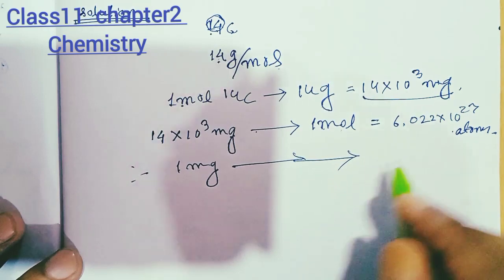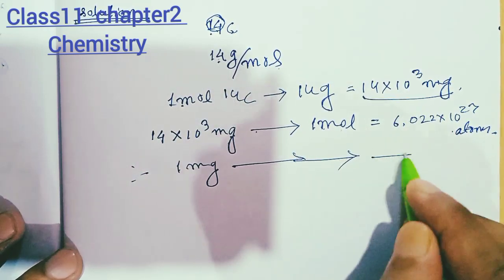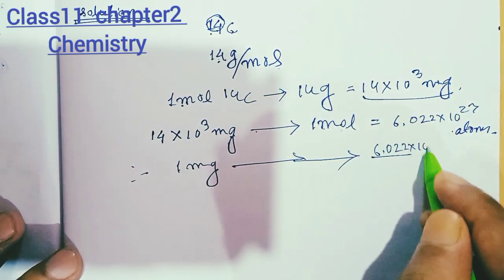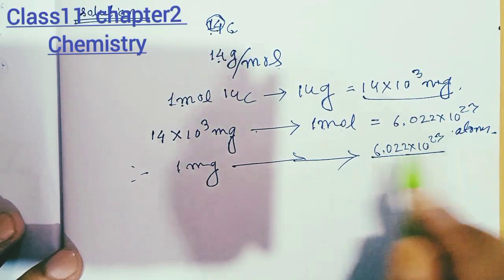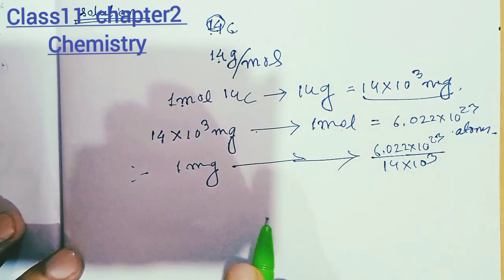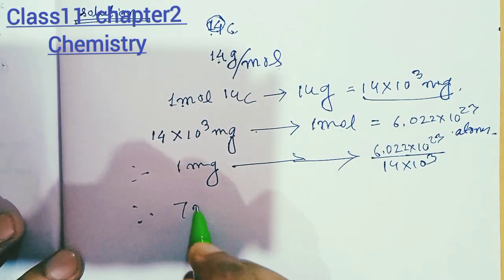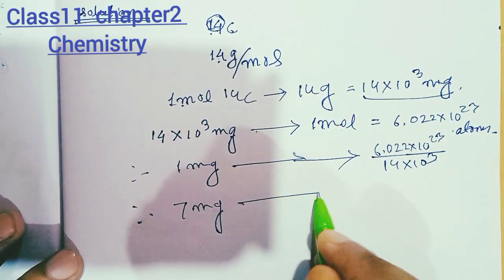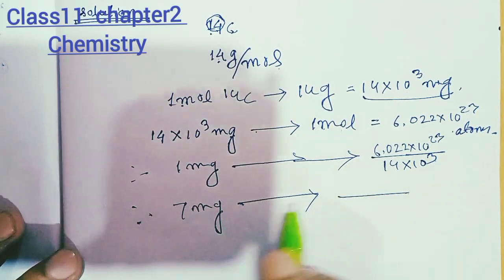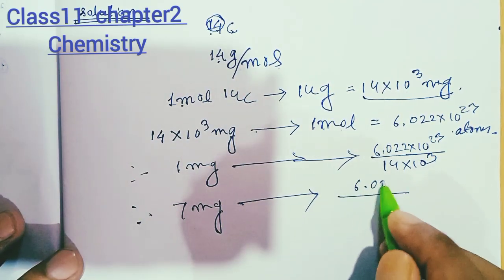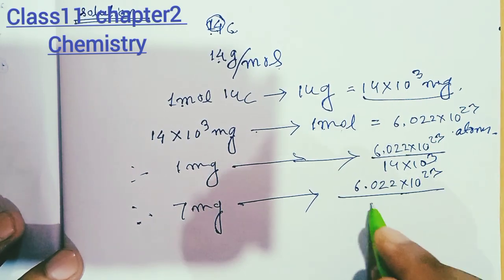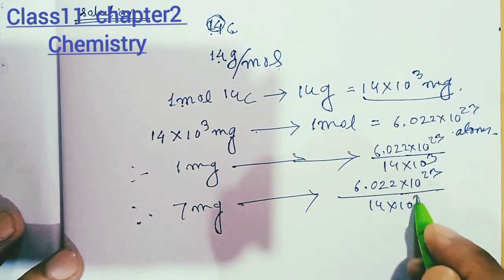For 1 milligram, we use 6.022 × 10²³ divided by 14 × 10³. For 7 milligrams of Carbon-14, the number of atoms is 6.022 × 10²³ divided by 14 × 10³, then multiplied by 7.